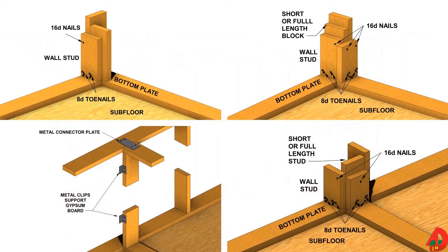Corner posts, also called corner assemblies, are constructed wherever a wall ties into another wall. Outside corners are at the ends of a wall. Inside corners occur where a partition ties into a wall at some point between the ends of the wall.